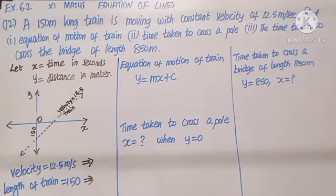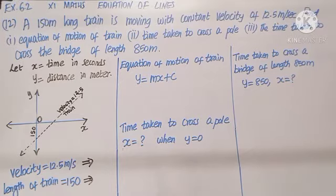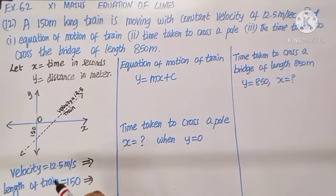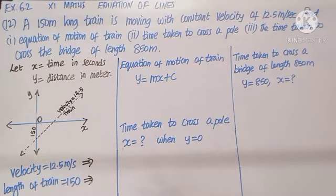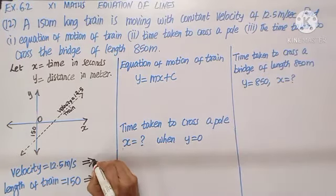Question number twelve: a 150-meter long train is moving with a constant velocity of 12.5 meters per second. Find the equation of motion of the train, the time taken to cross a pole, and the time taken to cross a bridge of length 850 meters. Given velocity links to slope, which we will learn next year in detail. The velocity given we take as M, so M equals 12.5.